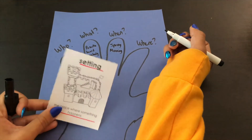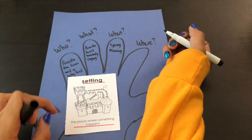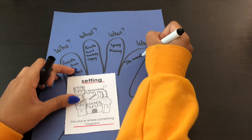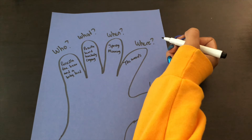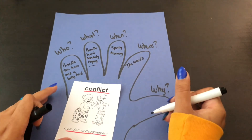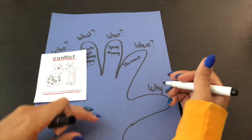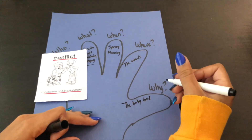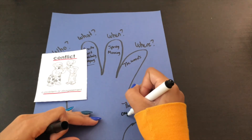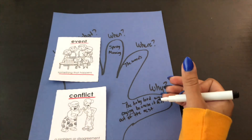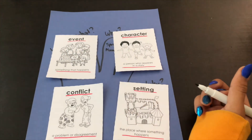Where did Priscilla take the walk? Where did this happen? In the woods. Why was the baby bird crying? What was the problem in the story? The baby bird was crying because it fell out of the nest. You see, it's easier to answer these questions when we keep the elements of the story in mind.